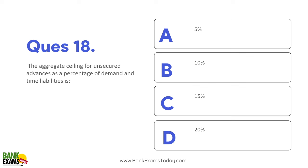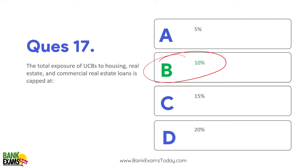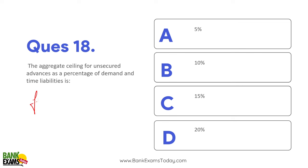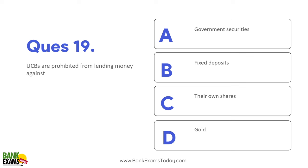The aggregate ceiling for unsecured advances as a percentage of demand and time liabilities is 10 percent for UCBs. UCB jo hai, apne total time and demand liabilities ka 10 percent unsecured advances de sakta hai - isse zyada unsecured loan nahi de sakte. UCBs are prohibited from lending money against their own shares - khud ke shares pe lend nahi kar sakte.